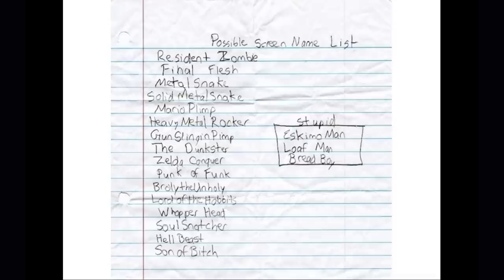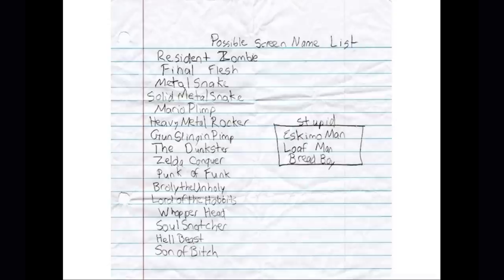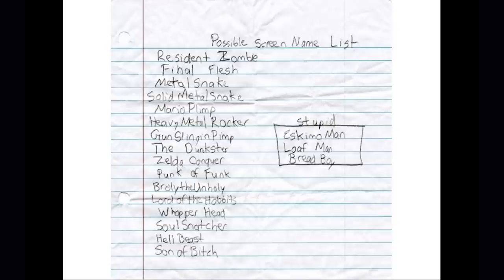We also tend to develop boundaries as we grow up. I love this — it's a 12-year-old boy trying to pick his screen name. He's got like good names: 'Punk of Funk' is totally great. Then he writes 'note to self: these are stupid, do not be bread boy.' 'Zelda Conqueror' — that's pretty good. 'Gunsling and Pimp.' And he's 12.